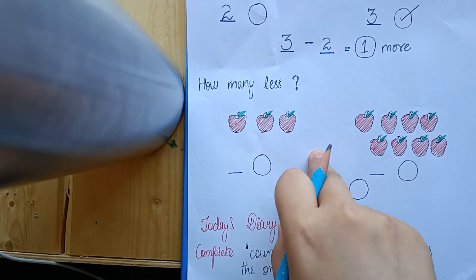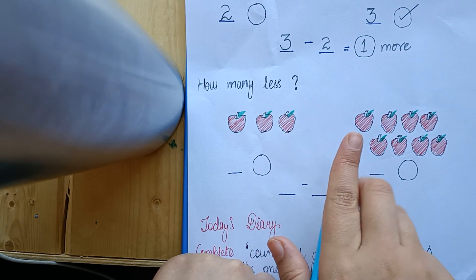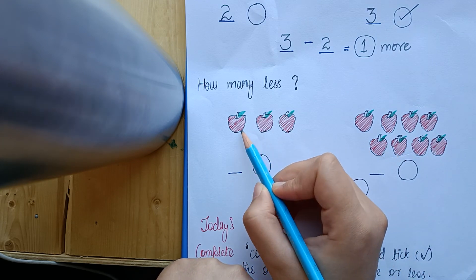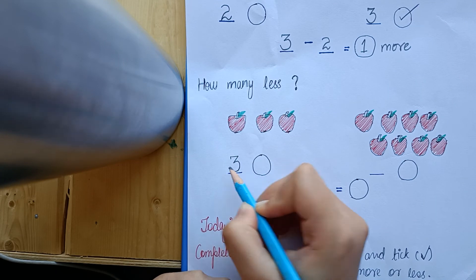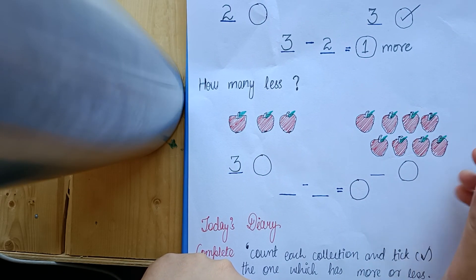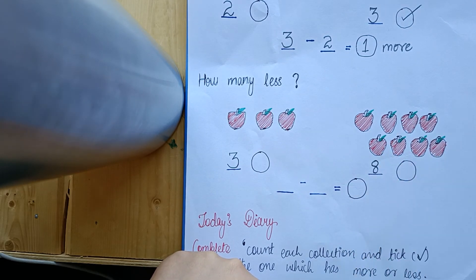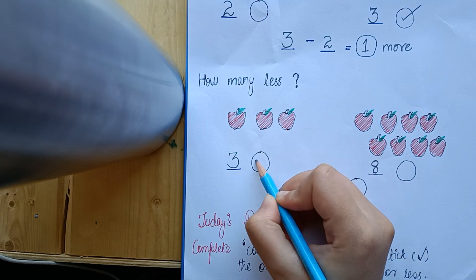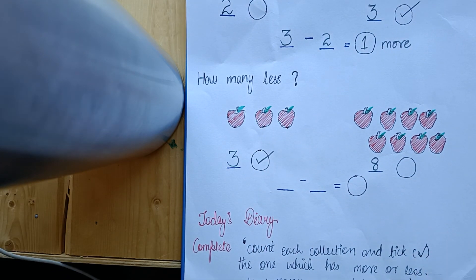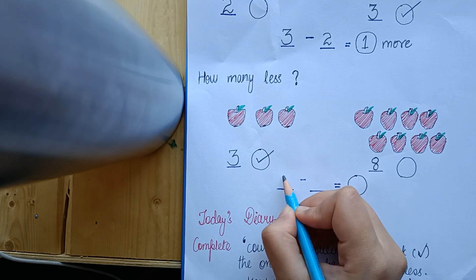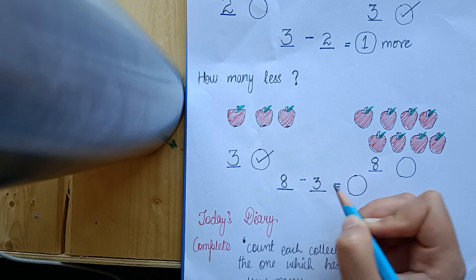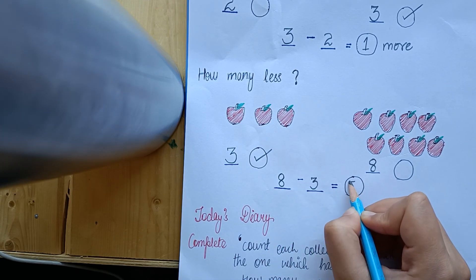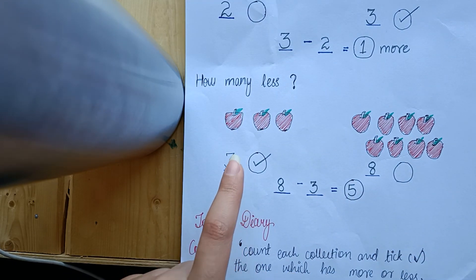Next, we will tell how many less. We need to count the collections and click the one which is less. Let's count: one, two, three — here we have three apples. And one, two, three, four, five, six, seven, eight — here we have eight apples. So we know that eight is more and three is less, so we will click the collection of three. Bigger number minus smaller number: eight minus three equals five. So in this collection five apples are less.